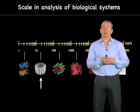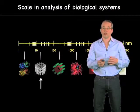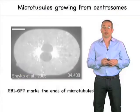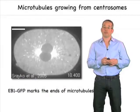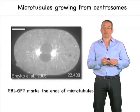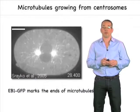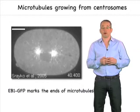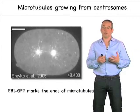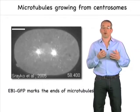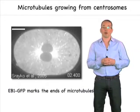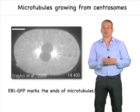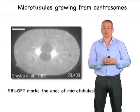Now, you can look at microtubules growing in cells. And in this movie, you can see the ends of microtubules growing throughout our C. elegans embryo. The ends of the microtubules are marked with a protein called EB1, which is known to follow and recognize only the beginnings of microtubules growing from centrosomes.